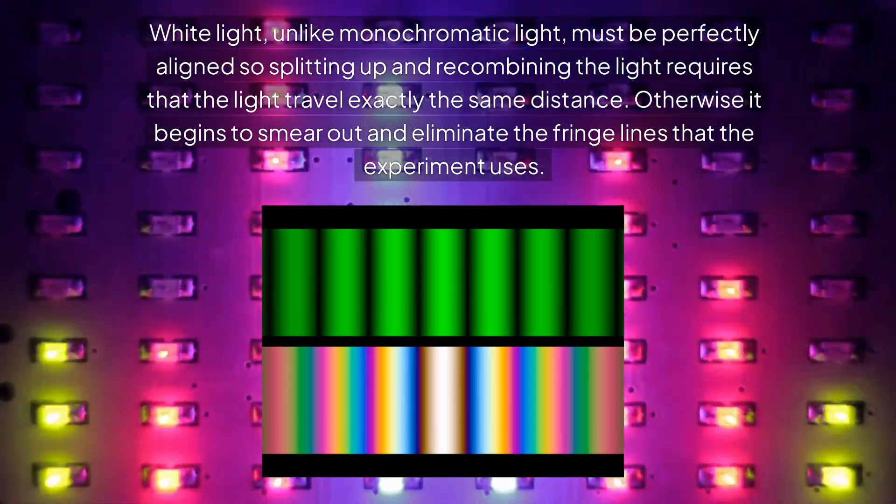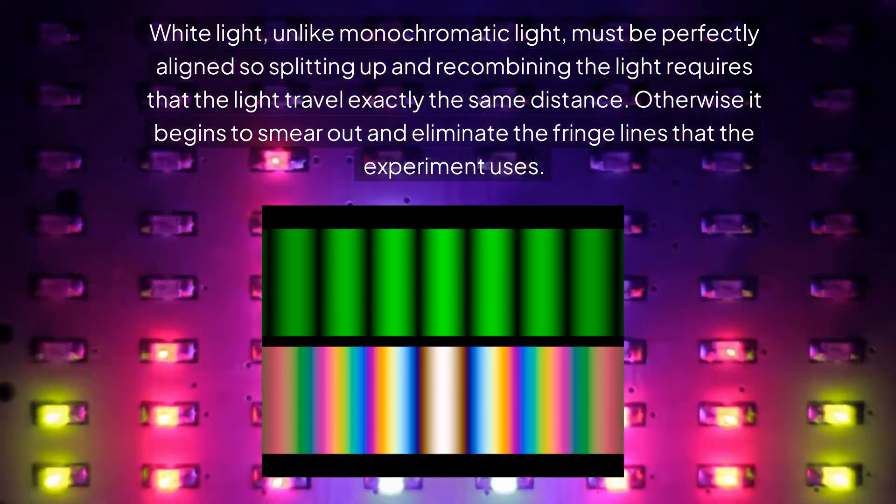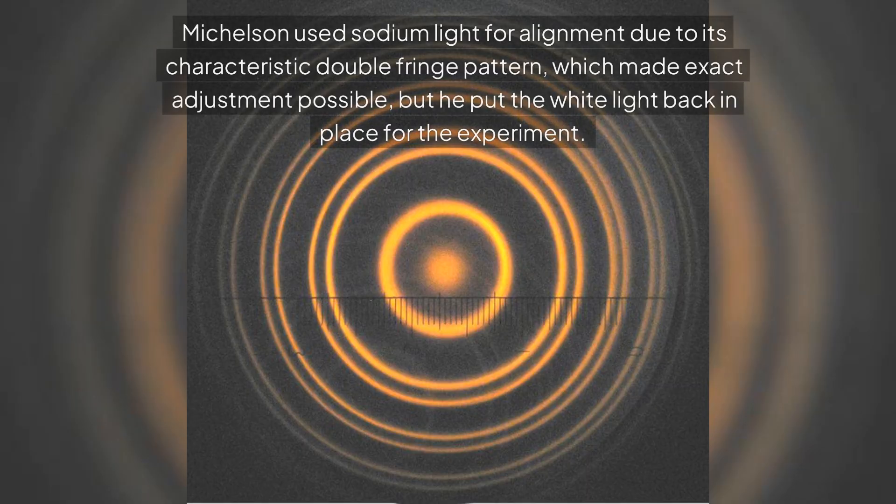Otherwise, it begins to smear out and eliminate the fringe lines that the experiment uses. Michelson used sodium light for alignment due to its characteristic double fringe pattern, which made exact adjustment possible, but he put the white light back in place for the experiment.